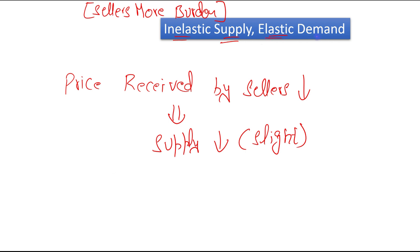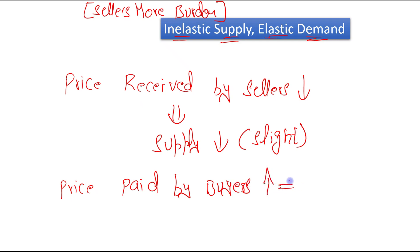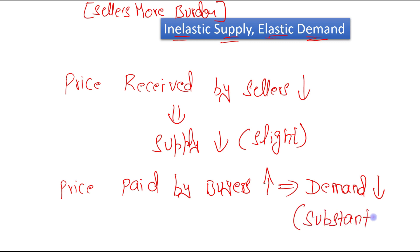Now let's come to the demand side — elastic demand. When a good is taxed, price paid by the buyers increases. This will lead to a decrease in demand for the good, and demand will decrease by a substantial amount because the buyers are having good alternatives to consume that particular good. When a good is taxed, they will be more willing to leave the market because they are having good alternatives, and when they are leaving the market, they will bear less of the burden of the tax. So in this case, buyers will bear less burden of the tax.